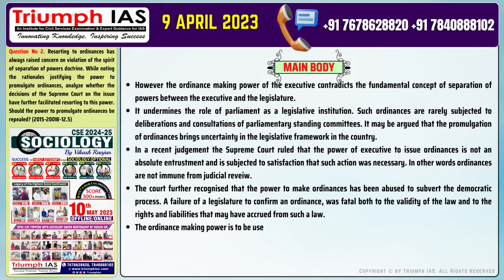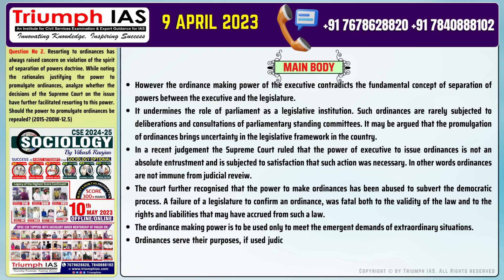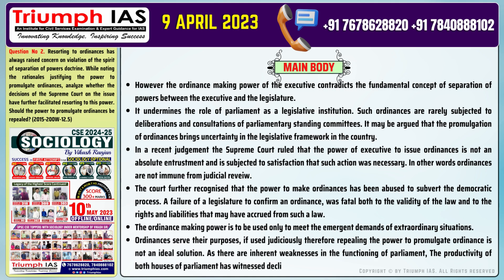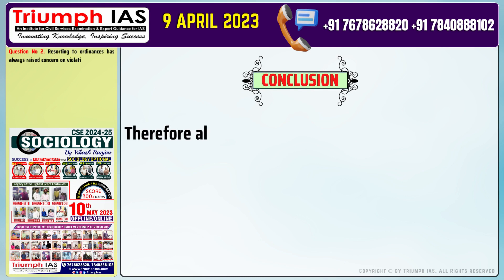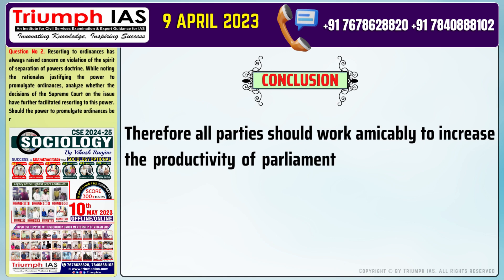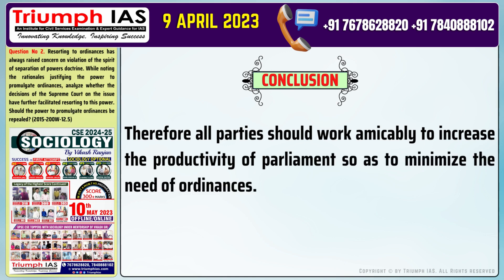Number five: The ordinance-making power is to be used only to meet the emergent demands of extraordinary situations. Number six: Ordinances serve their purpose if used judiciously; therefore, repealing the power to promulgate ordinances is not an ideal solution, as there are inherent weaknesses in the functioning of Parliament and the productivity of both houses has witnessed a decline in recent years. In conclusion: All parties should work amicably to increase the productivity of Parliament so as to minimize the need for ordinances.